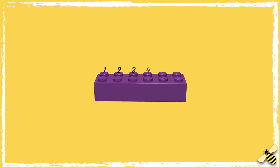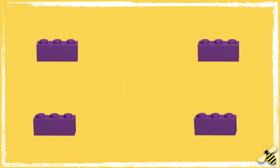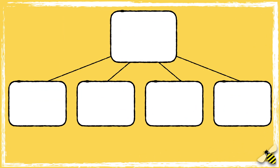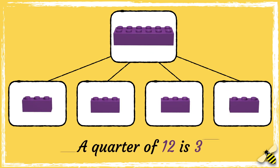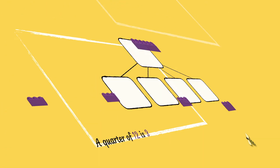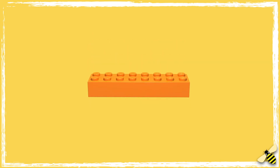Let's have a look at another brick. This brick has 12 studs. Let's try splitting this brick into quarters. We now have four pieces. There are three studs in each quarter, so a quarter of 12 is three.